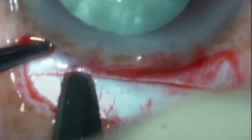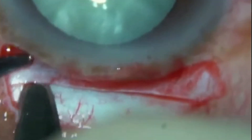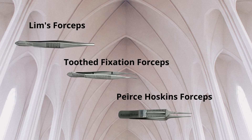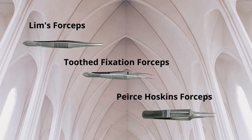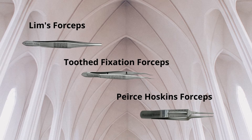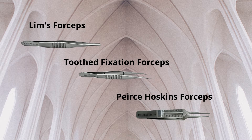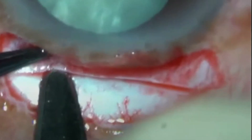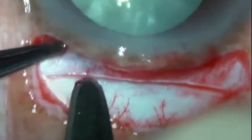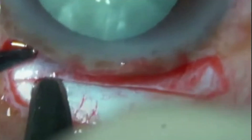Stabilizing the globe with tooth forceps makes tunnel construction easier. Limbs forceps, Pierce-Hoskins forceps, and tooth fixation forceps are often used for globe fixation. However, to avoid tunnel damage and leakage, the forceps should not be used on the tunnel flap. Sharp crescent knife and keratome should be used to construct the tunnel.